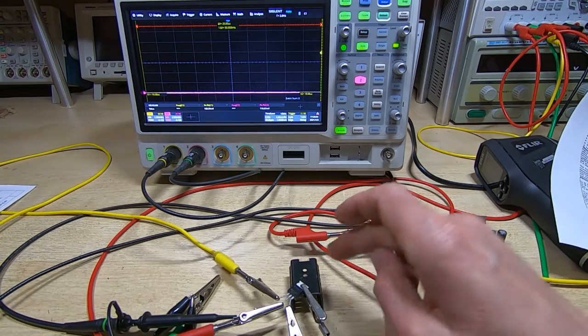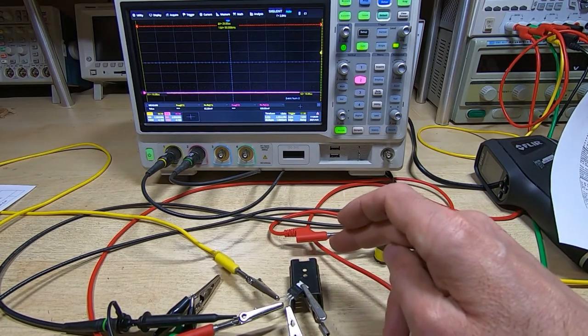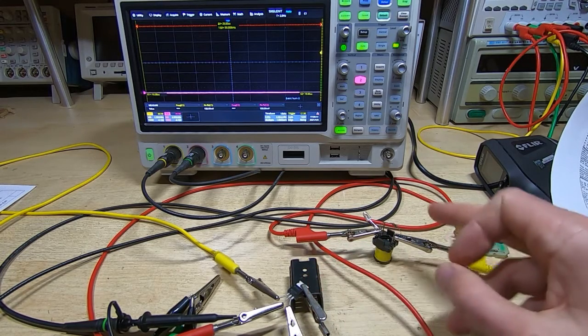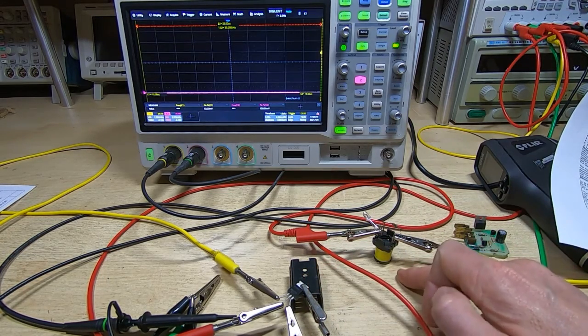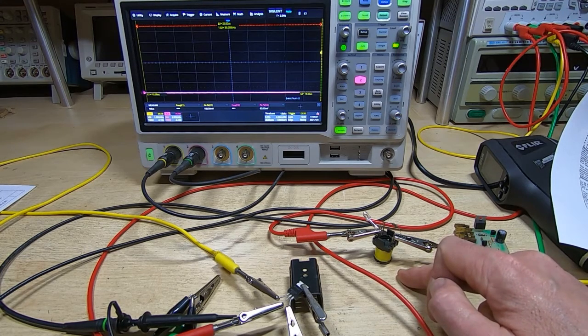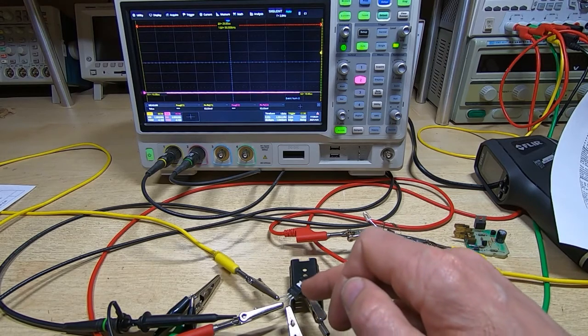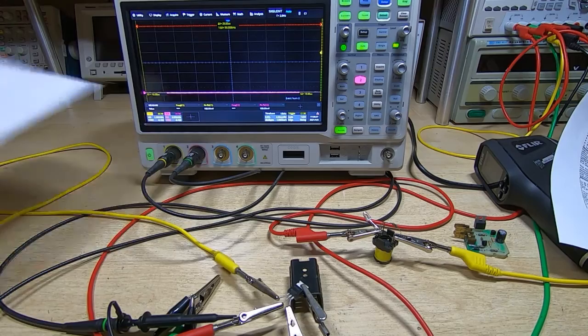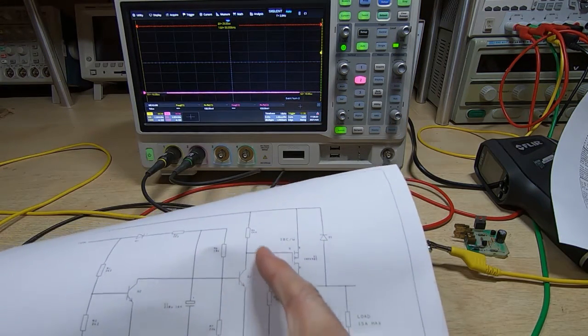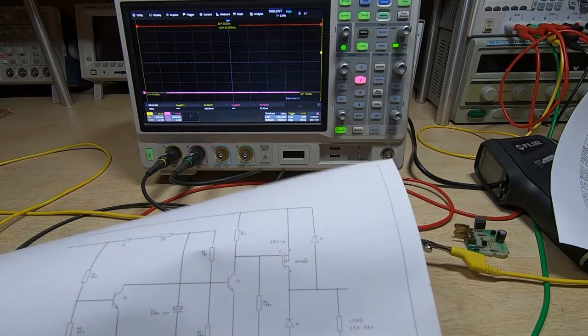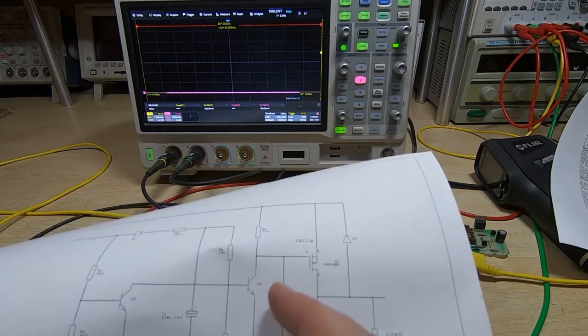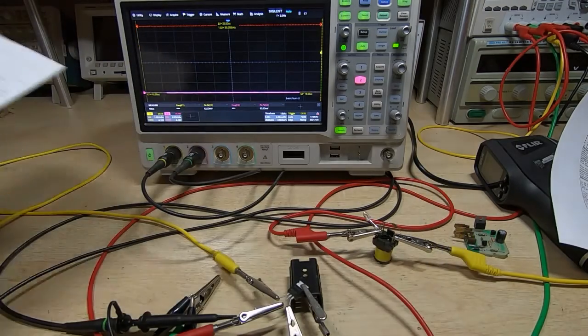I've got this connected to the lab supply set to give 6.5 amps at 12 volts. It's going through the MOSFET to drive the dummy load which has got the same DC resistance as the solenoid. I've got this setup in exactly the same way, the only difference is instead of it being driven through a transistor, this is just floating so we can pull it high or low.